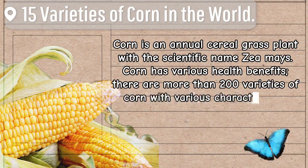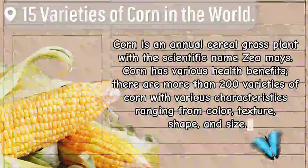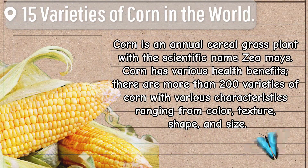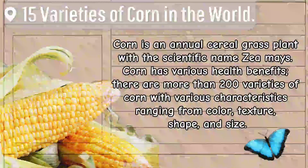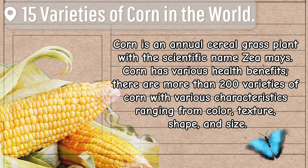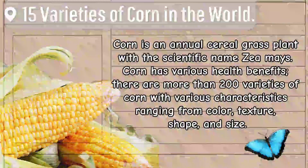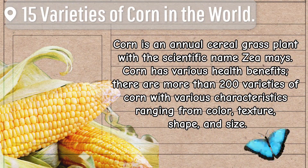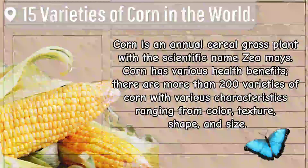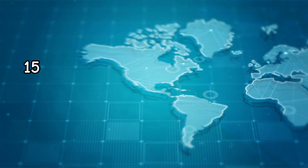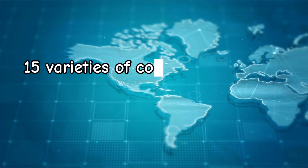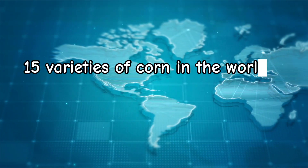Corn is an annual cereal grass plant with the scientific name Zea mays. Corn has various health benefits. There are more than 200 varieties of corn with various characteristics ranging from color, texture, shape, and size. Here are the 15 most popular corn varieties in the world.